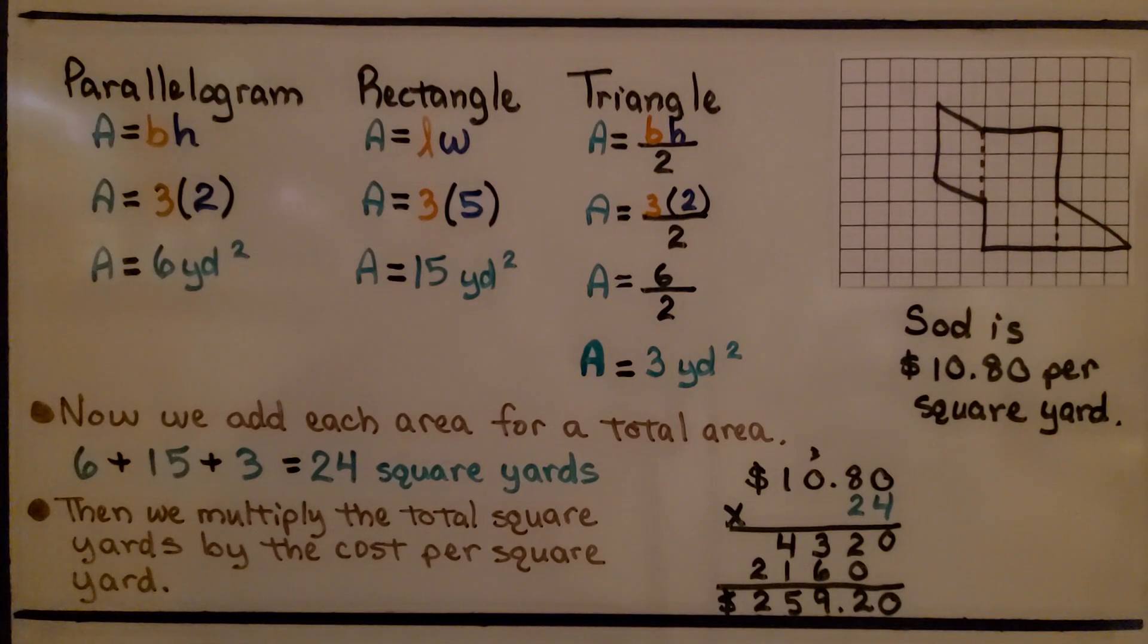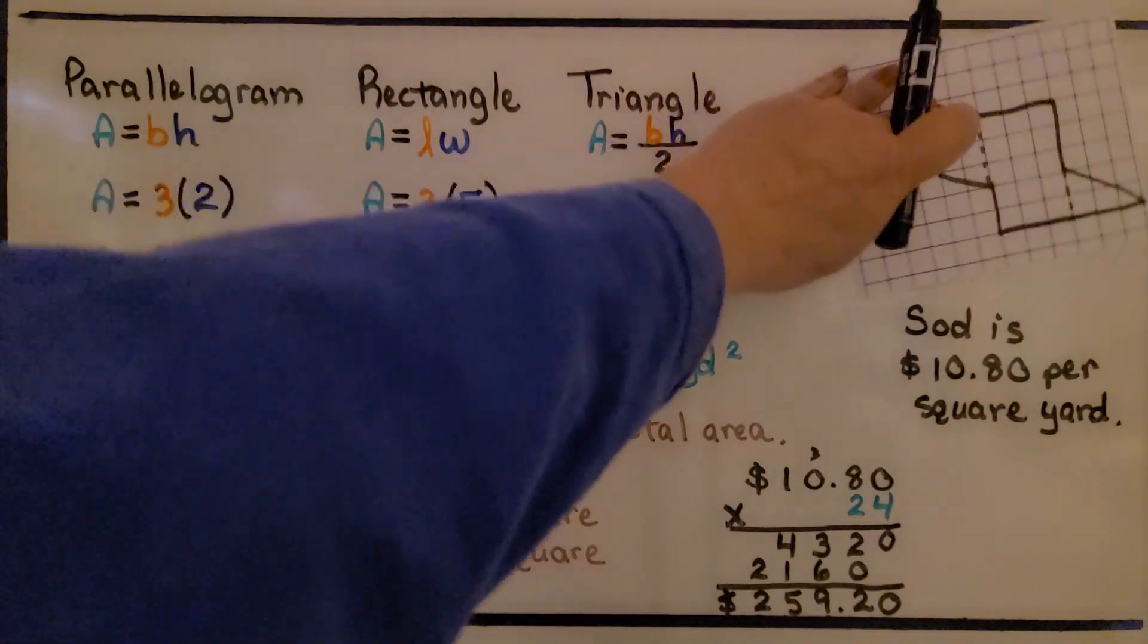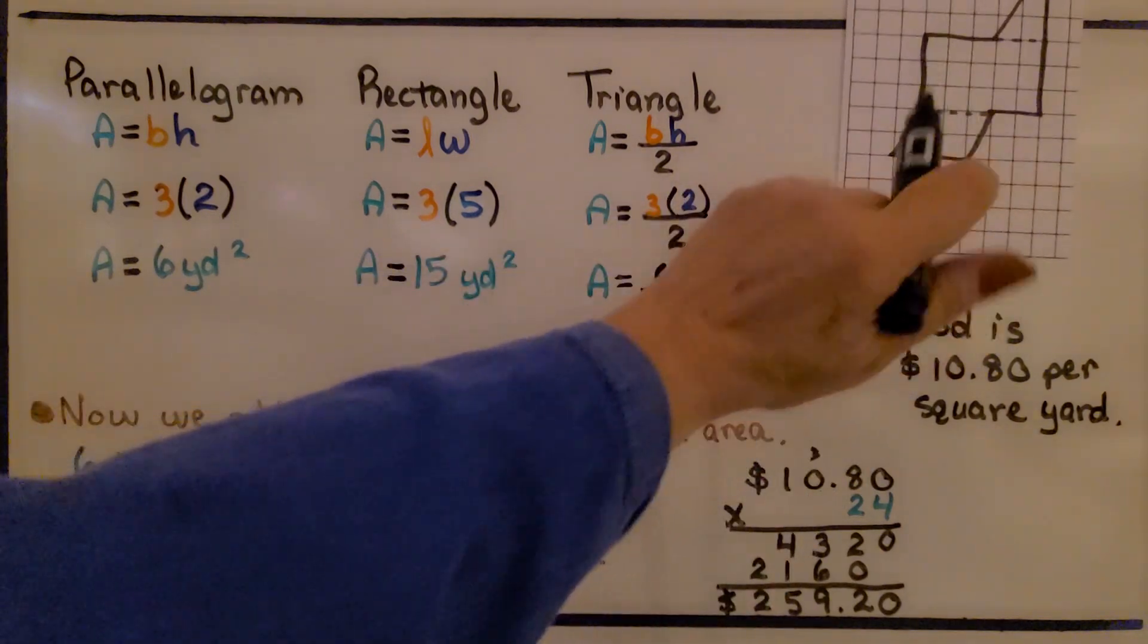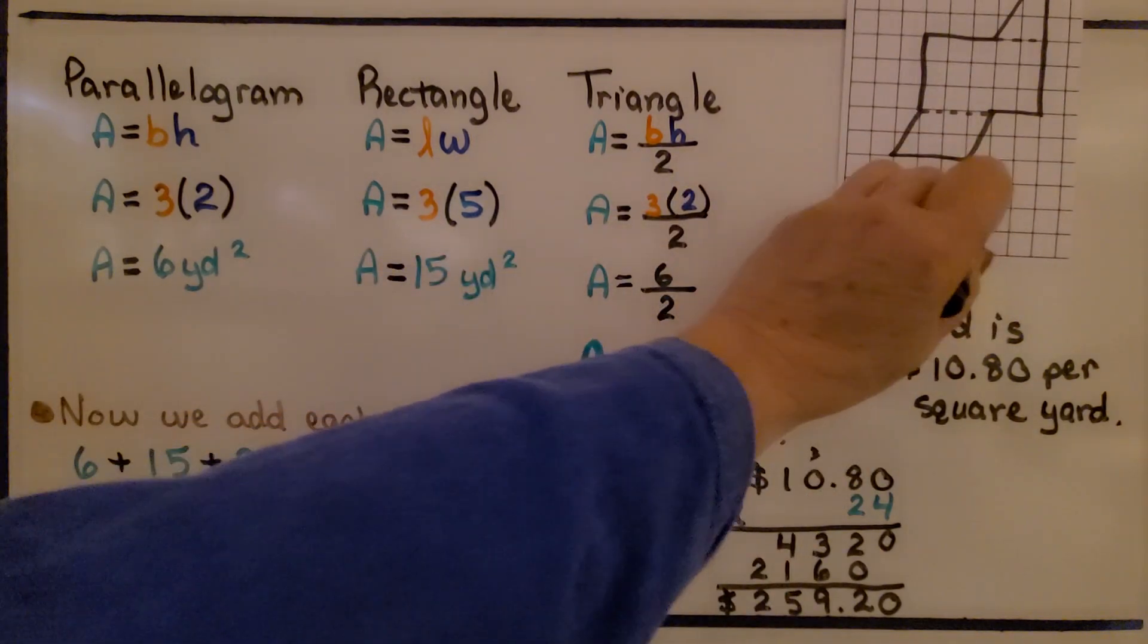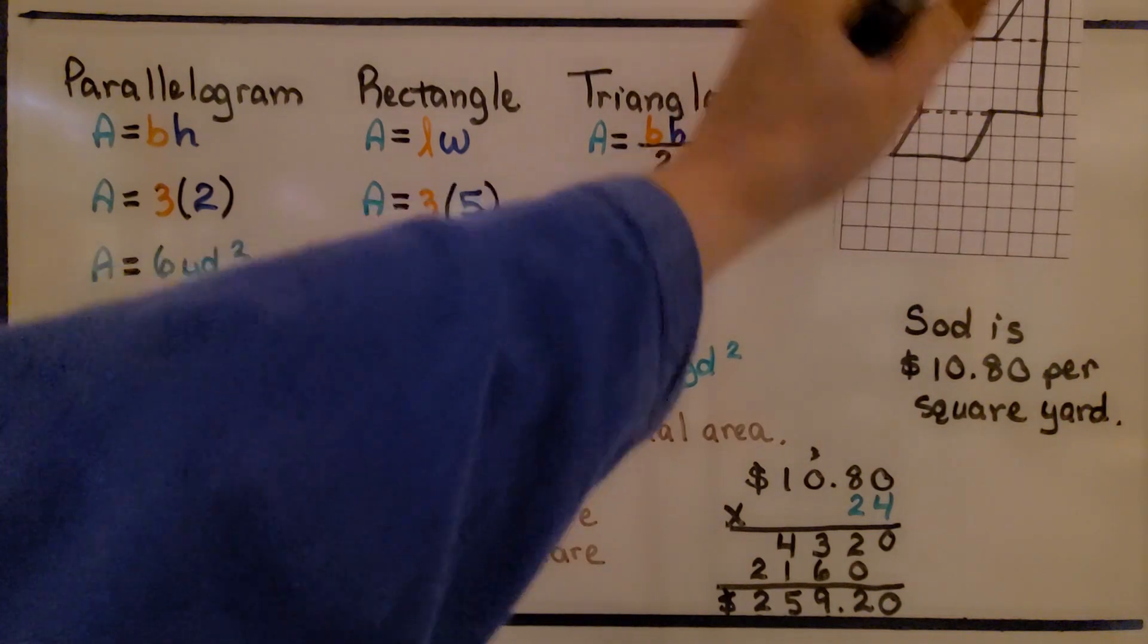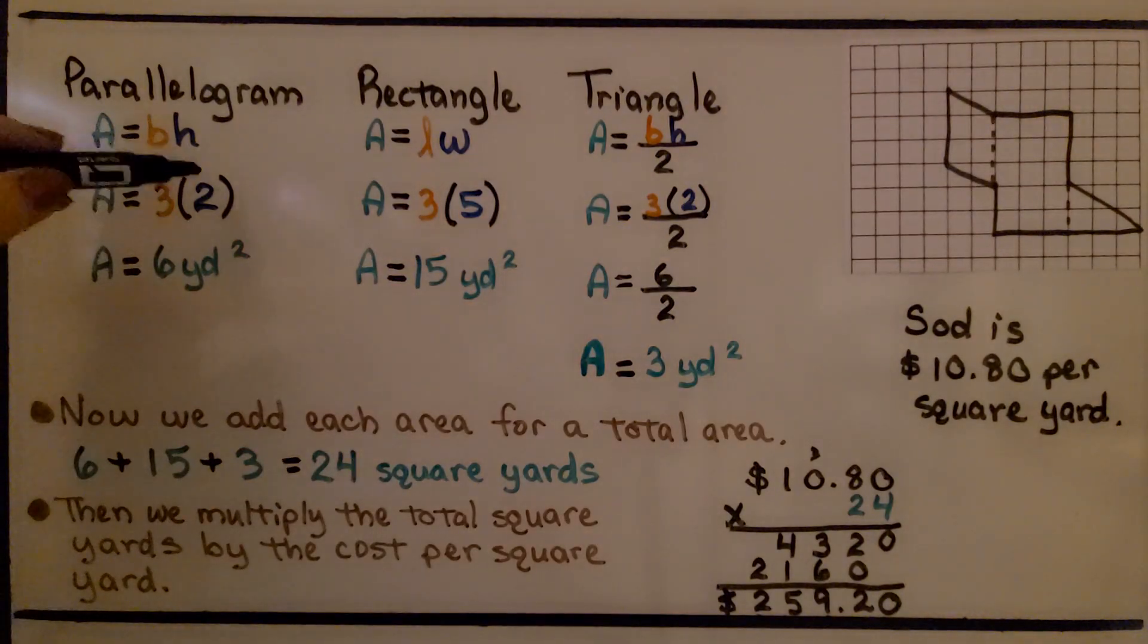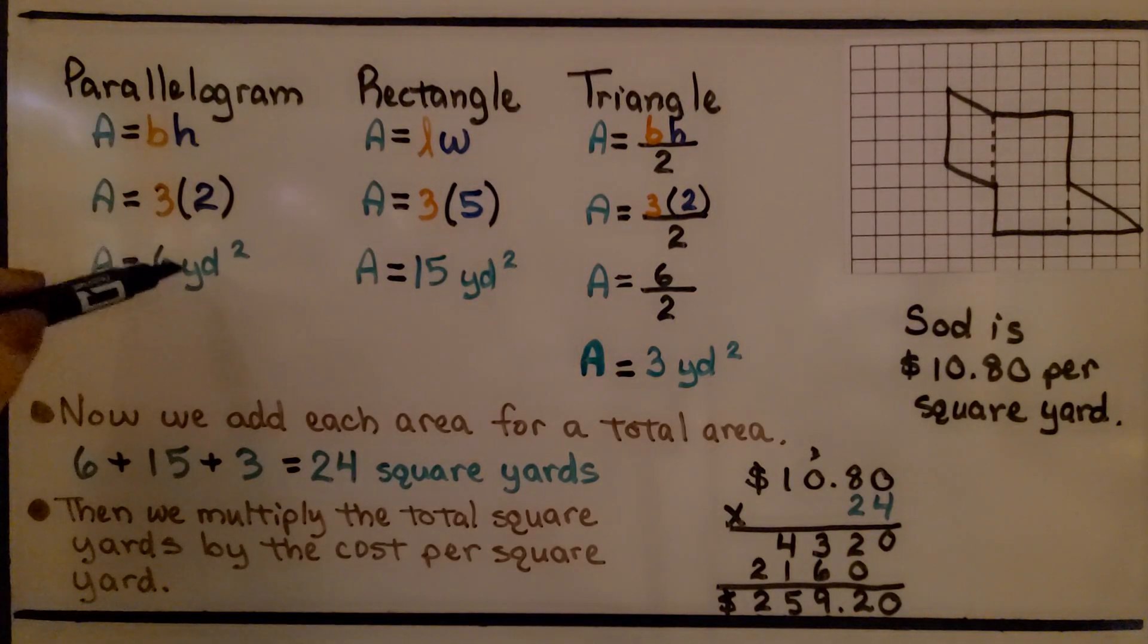And we can count the squares. For the parallelogram, we can think of it as sideways, as if it's turned this way. We can say that the base is 1, 2, 3, and its height is 1, 2. We do 3 times 2. That's 6 yards square, or 6 square yards.